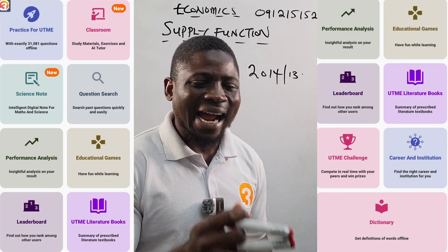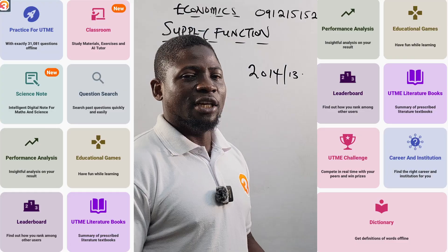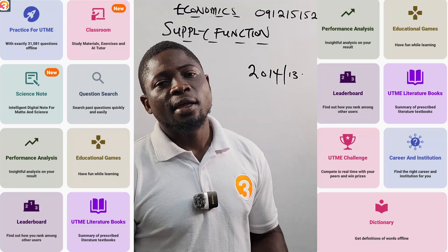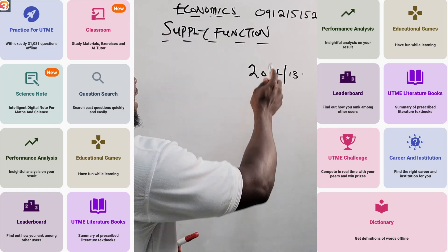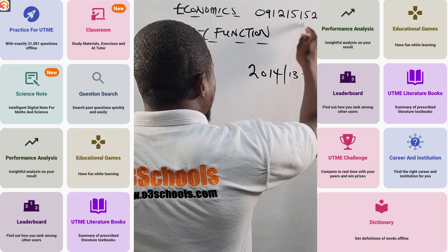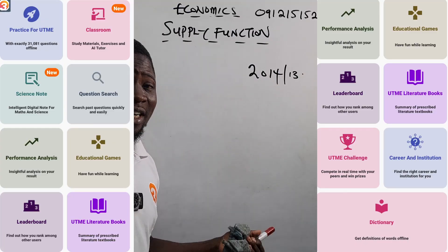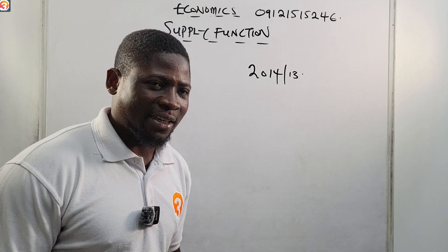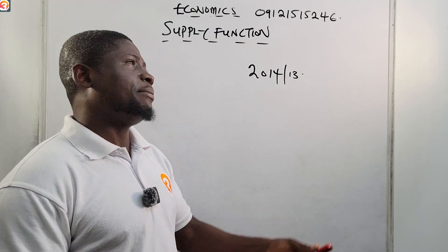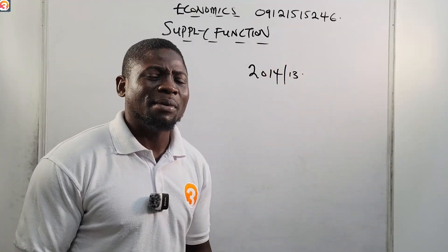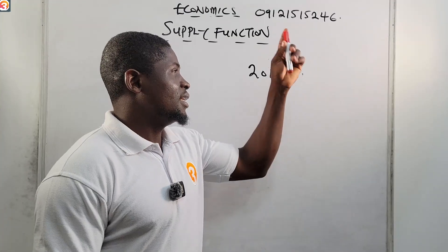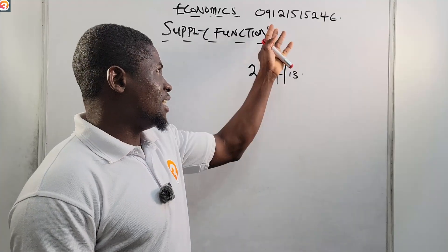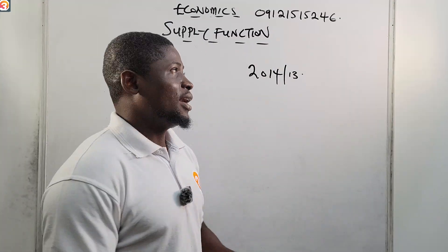All these many features and more are available for a price less than the price of rice and chicken in a good restaurant. Please do not be stingy to yourself — do not be stingy to your future. Make sure you get the app and activate it. If you need the activation key, make the payment, send your receipt on WhatsApp, and you'll get your key. If you haven't downloaded the app, or need it for your laptop or computer, message this number on WhatsApp: 09121515246.